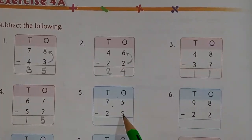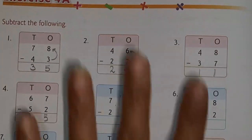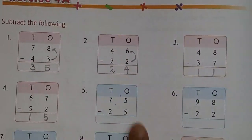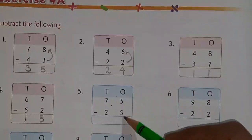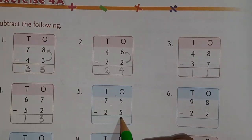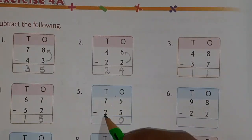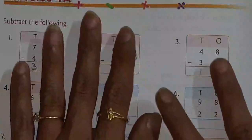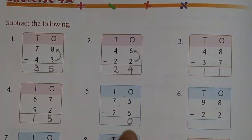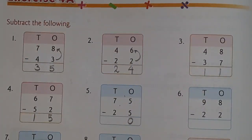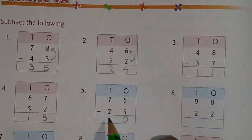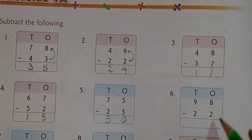Next one: 5 minus 5. When you open 5 fingers and cut 5 — 1, 2, 3, 4, 5 — when there is the same number on both sides in subtraction, the answer comes 0. Next: 7 minus 2 — you can open 7 fingers and cut 2, your answer is 5. Or count after 2 till 7 — 3, 4, 5, 6, and 7 — 5 fingers. So your answer is 50.